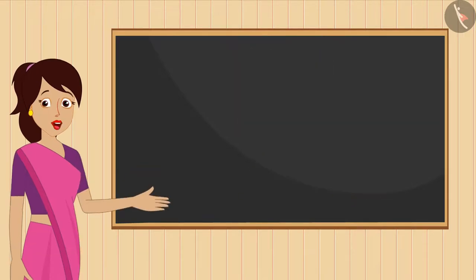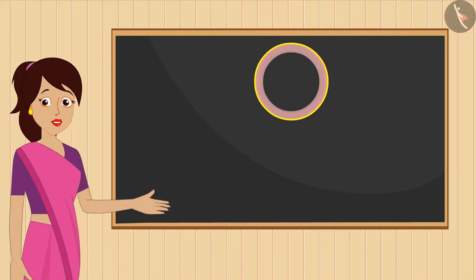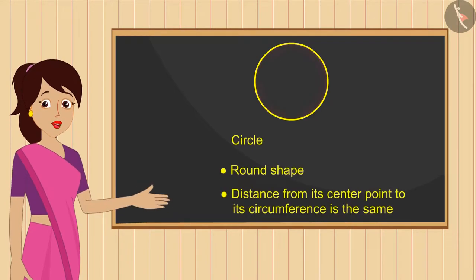Now tell me, if we trace this bangle on a paper, then which shape shall we get? This is a circle. Absolutely right! Because this is a round shape in which the distance from the center point to its circumference is the same, so it's a circle.